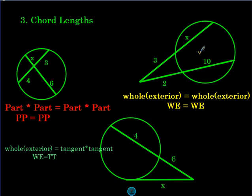For WE WE, that is when we have two lines that go outside the circle. We're going to do whole times exterior equals whole times exterior. Please remember that when you are doing the whole line, you add these pieces together. So this whole here would end up being x plus 3. This whole segment here would be 10 plus 2 or 12. And then WT is when we have whole times exterior equals tangent times the tangent. That's when you have one secant line and one tangent line. So really you can think of it as tangent squared.